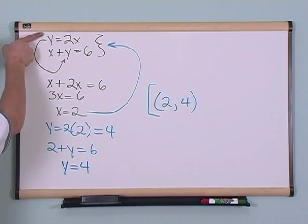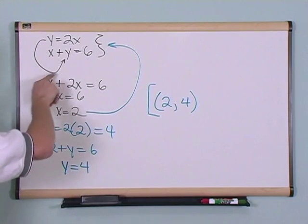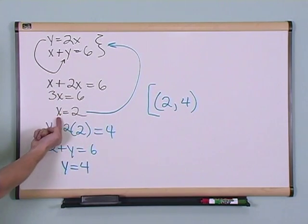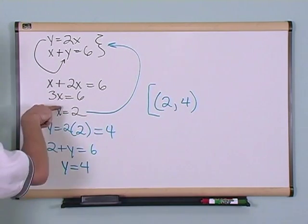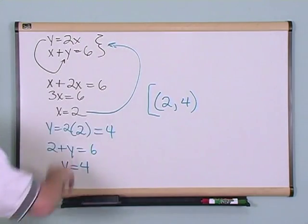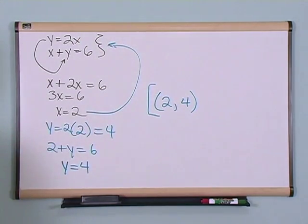You take one of the equations, plug it into the other one, and solve for a variable, in this case x. Then you take what you found, you plug it back in to either one of these equations, and then you'll get the other variable that you're looking for, y.